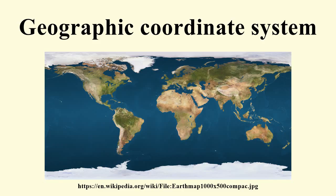The Universal Transverse Mercator and Universal Polar Stereographic coordinate systems both use a metric-based Cartesian grid laid out on a conformally projected surface to locate positions on the Earth. The UTM system is not a single map projection but a series of 60, each covering six-degree bands of longitude. The UPS system is used for the polar regions not covered by UTM. During medieval times, the stereographic coordinate system was used for navigation purposes; it was later superseded by the latitude-longitude system. The stereographic coordinate system is still used in modern times to describe crystallographic orientations in the fields of crystallography, mineralogy, and material science.